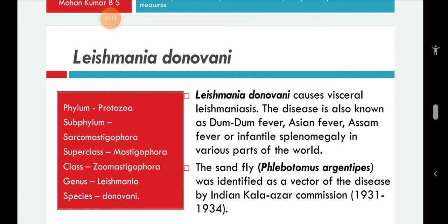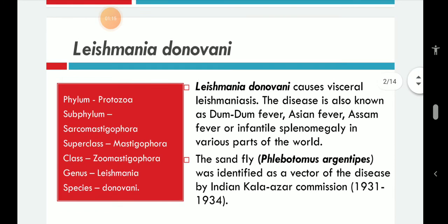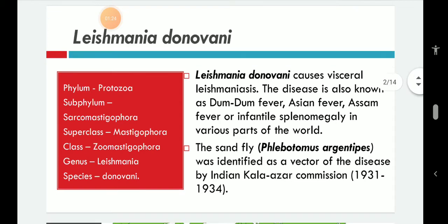Leishman discovered the parasite in the spleen smear of a soldier in England who died of fever contracted at Dum Dum in Kolkata — Dum Dum being an airport in Kolkata. Whereas Donovan found the same in the spleen smear of a patient suffering from Kala-azar in India.